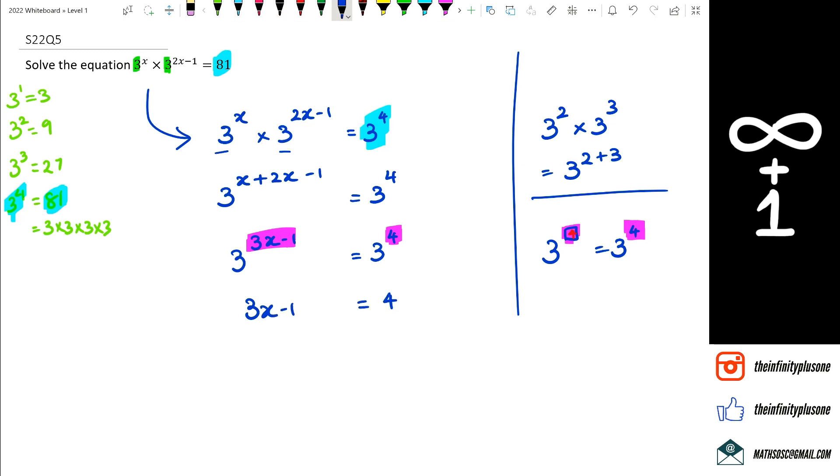And our next step would be to rearrange. So we've got 3x is equal to 4, and of course, minus 1 changes to plus 1. Then we've got 3x is equal to 5. And then x equals 5, and of course, 3 is getting multiplied, so on the other side, it is going to get divided. And so your answer is 5 over 3.